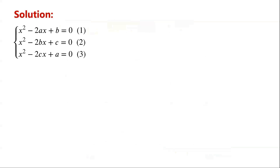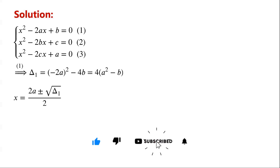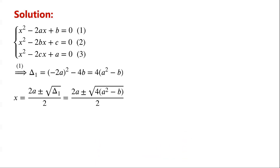We can see that each equation is a quadratic equation, so we can work out x by using the quadratic formula. For equation 1, the discriminant Δ1 equals negative 2a all squared minus 4b, which is equal to 4 times (a squared minus b). And x equals 2a plus or minus the square root of Δ1 over 2, which simplifies to a plus or minus the square root of a squared minus b.